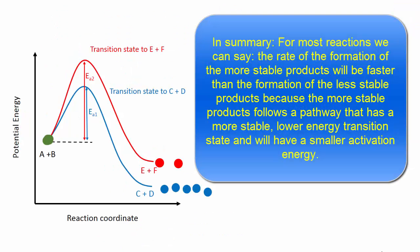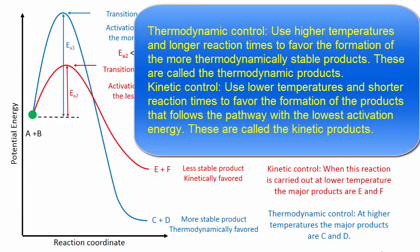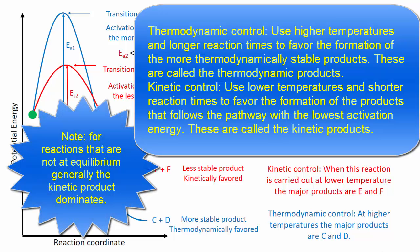In summary, for most reactions, the rate of formation of the more stable products will be faster than the formation of the less stable products, because the more stable products follow a pathway with a more stable, lower energy transition state and a smaller activation energy. For reactions that are at equilibrium, when the activation energy of the more stable product is greater than the activation energy of the less stable product, the ratio of products will depend on the reaction conditions. Thermodynamic control: use higher temperatures and longer reaction times to favor the formation of the more thermodynamically stable products — these are called the thermodynamic products. Kinetic control: use lower temperatures and shorter reaction times to favor the formation of the products that follow the pathway with the lowest activation energy — these are called the kinetic products. Note: for reactions that are not at equilibrium, generally the kinetic product dominates.